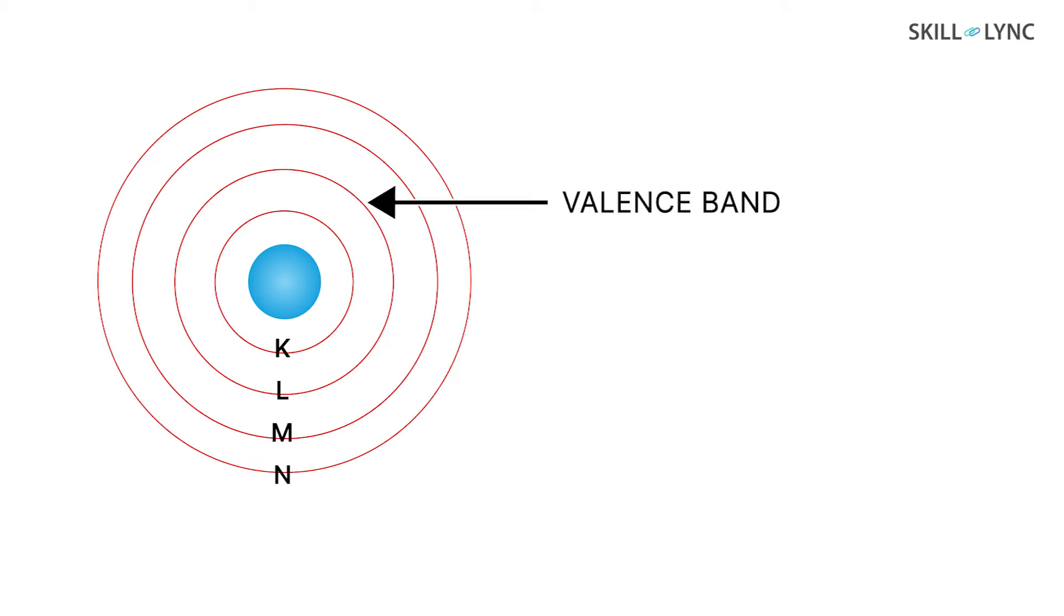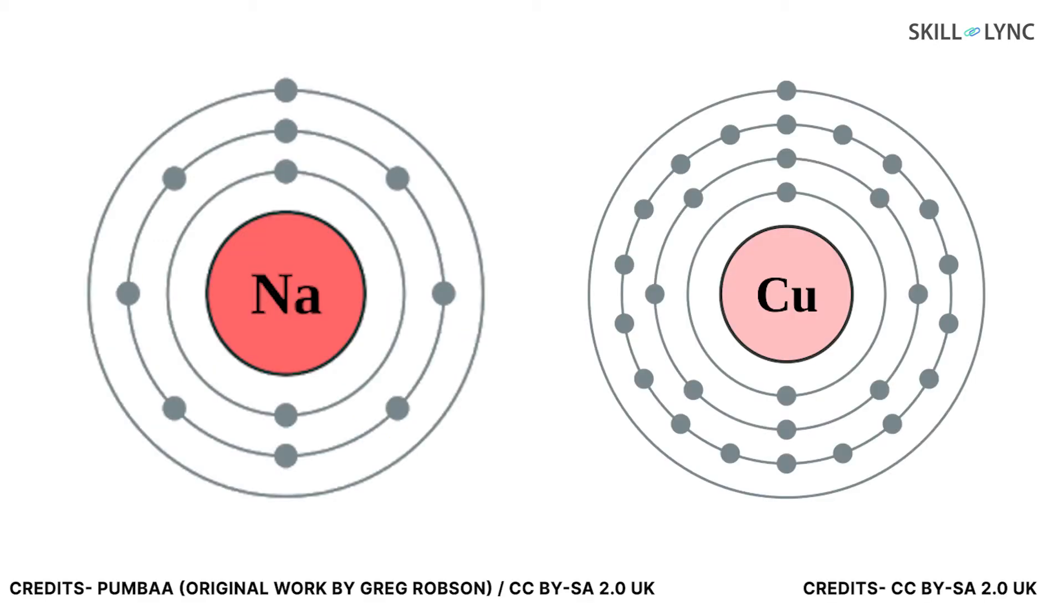The outermost shell of the atom in which the electrons are loosely held is called the valence band. This could be the M-shell in case of sodium or the N-shell in case of copper, that is the outermost shell.